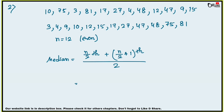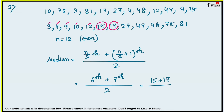For even n, the median formula uses the (n/2)th and (n/2 + 1)th observations. Here n is 12, so the 6th and 7th observations. The 6th observation is 15 and the 7th observation is 17. So median = (15 + 17) / 2 = 32 / 2 = 16. Your answer is 16.